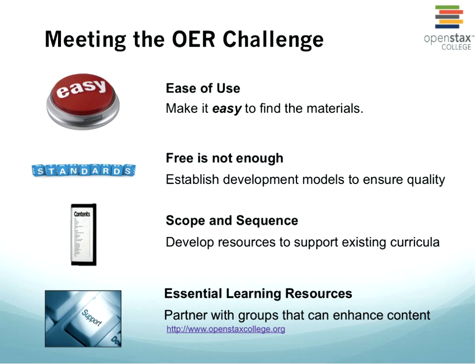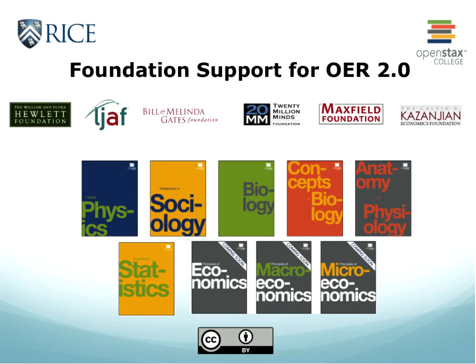Thanks to foundation support from the Hewlett Foundation, the 20 Million Minds Foundation, the Laura and John Arnold Foundation, the Gates Foundation, and others, we've been able to build this library — we'll be up to 25 textbooks when done. Current available titles include physics, sociology, biology, concepts of biology, anatomy and physiology, and statistics. Economics and pre-calculus will be coming out in about two weeks. OpenStax College does not provide coursework — we're not a MOOC and don't plan to be.